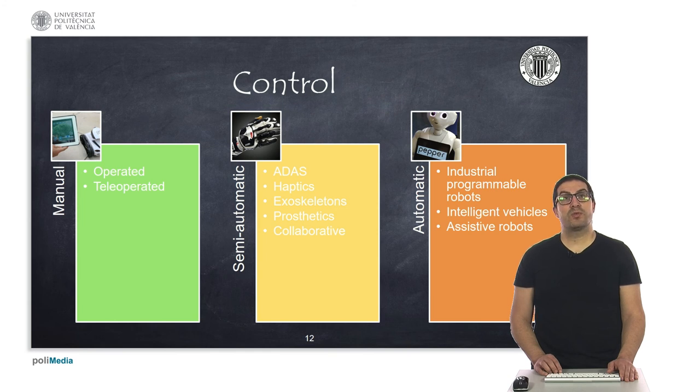Robots can be manually controlled, semi-automatic or fully automatic. In manual control, decisions are only made by the human operator, and thus, the robot acts just as a machine to be controlled. Robots with semi-automatic control are used in applications where the decisions are shared, this is also known as shared control, and part of them are taken by the human, but the other decisions are taken by the robot.